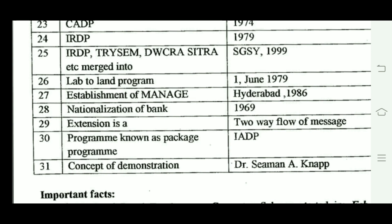There are different types of Participatory Rural Appraisal (PRA) techniques, including: transit walk, timeline, time trend, matrix ranking, Venn diagrams, preference ranking, and wealth ranking.